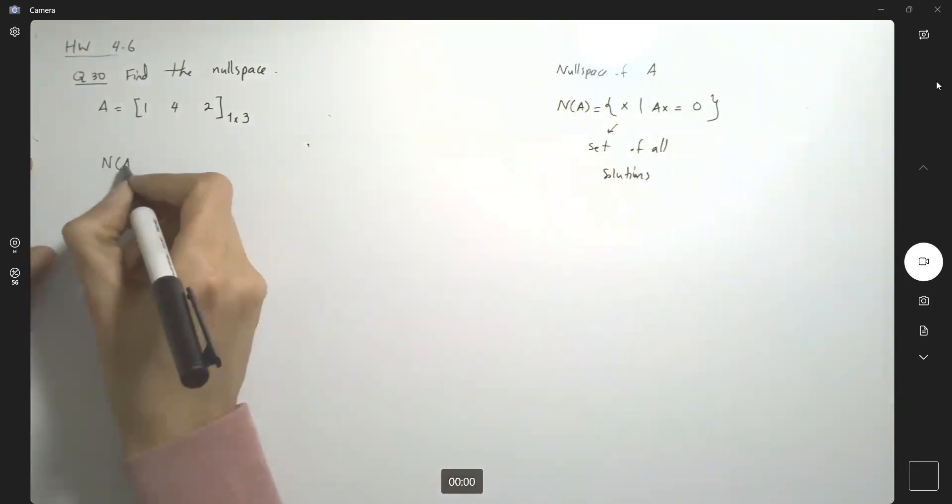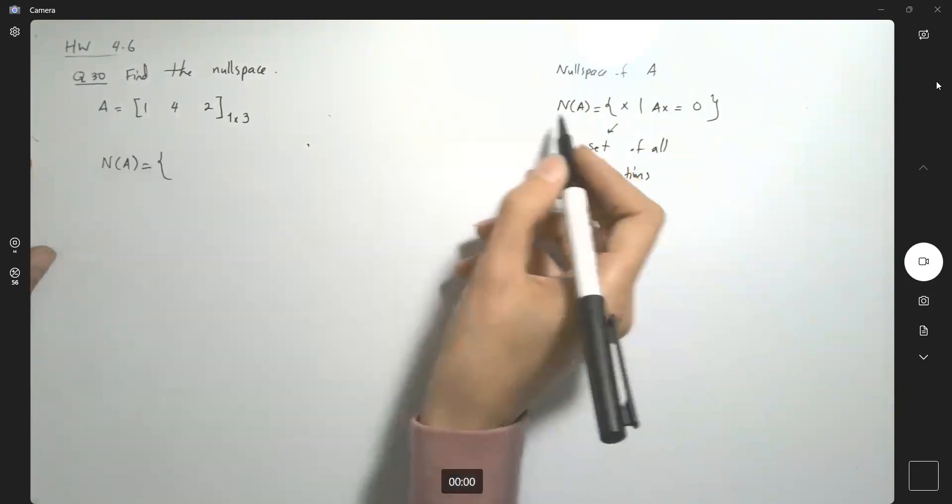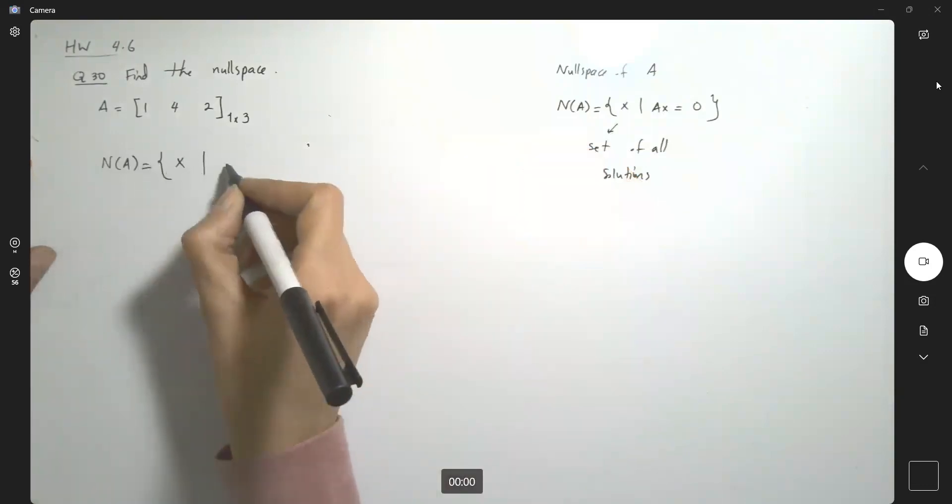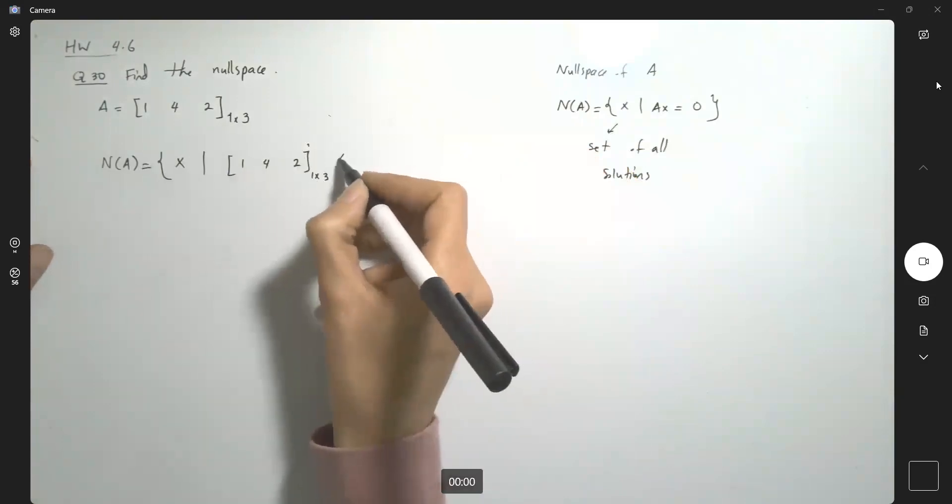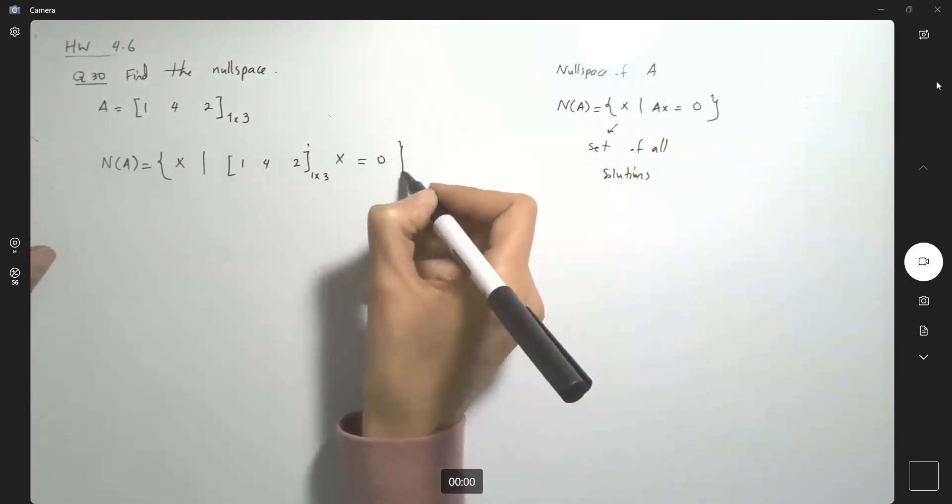So N(A) in this case is the set of all x vectors such that this matrix, one by three matrix [1, 4, 2], one row, three columns, multiplied by x gives you the zero.